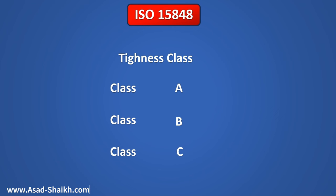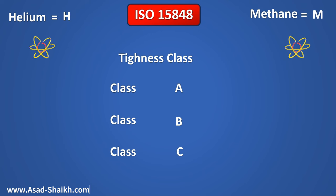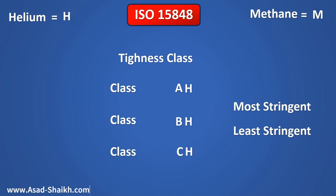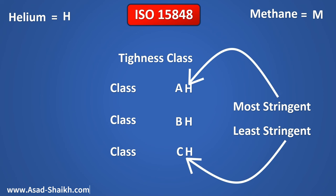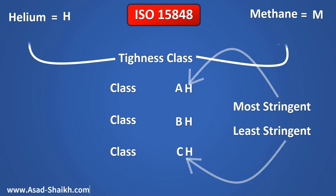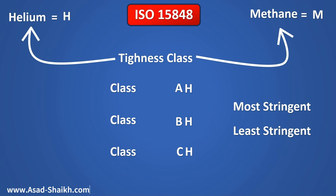Going further into ISO 15848, the tightness class is very important. The class is divided into Class A, Class B, and Class C, with the test gas being either helium or methane, defined by H and M respectively. So for helium you have AH, BH, and CH. Class A is the most stringent while Class C is the least stringent. If you use methane instead, you have AM, BM, and CM.